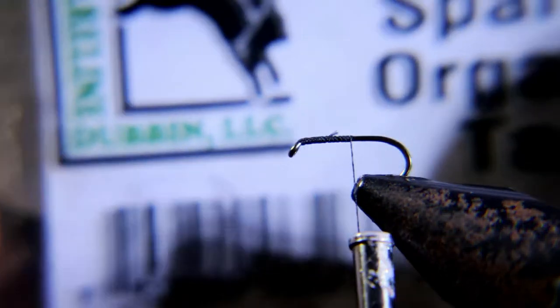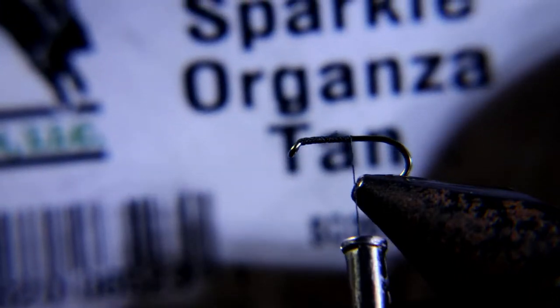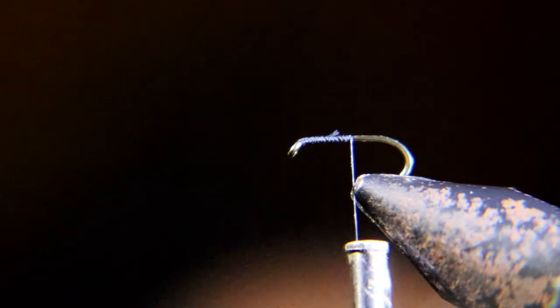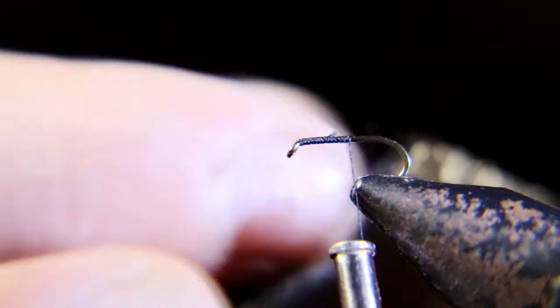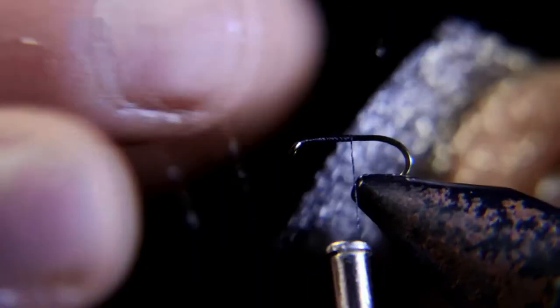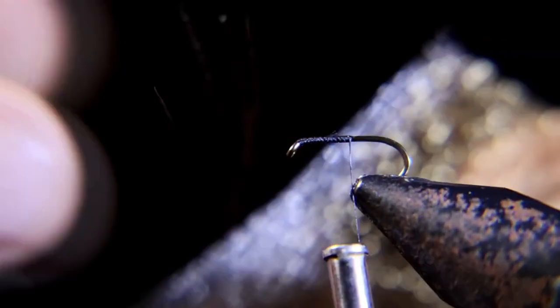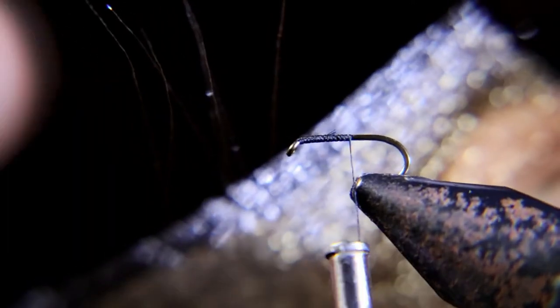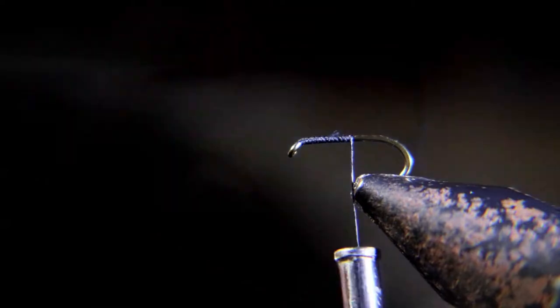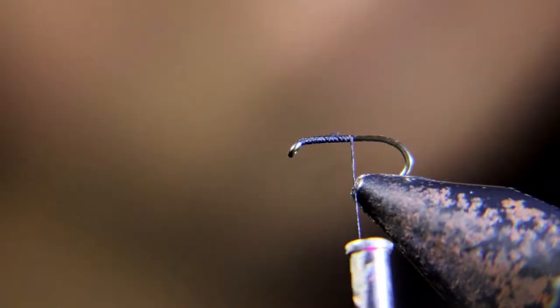Now we can use the sparking sparkle organza. We use tan, you could use white, I prefer the tan. You can see how this stuff flakes off in little strands. You want about three strands and I double it and triple it because you really don't need that long for the tail here.